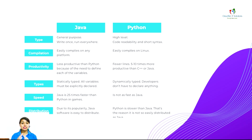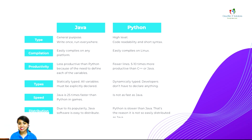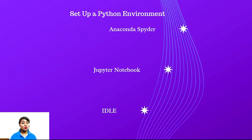Regarding types, Java is statically typed — all variables must be explicitly declared prior to use. Python is dynamically typed — developers do not need to declare variables at all. Regarding speed, Java is 25 times faster than Python in games. For distribution, Java software is easy to distribute due to its popularity, but Python is slower than Java, which is why it is not as easily distributed.